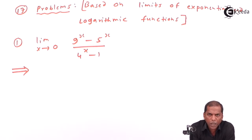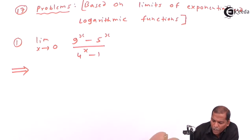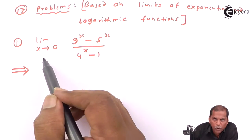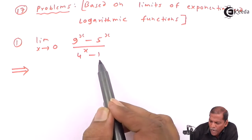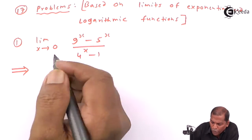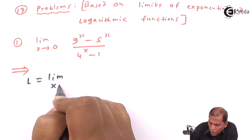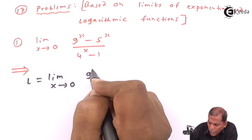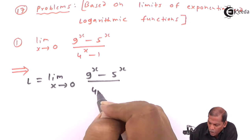Hello friends, now we see subtopic 17, which includes problems based on limits of exponential functions and logarithmic functions. Problem number one is: the limit as x tends to zero of nine raised to x minus five raised to x, whole thing divided by four raised to x minus one. We denote this as L, so L equals limit as x tends to zero of nine raised to x minus five raised to x upon four raised to x minus one.